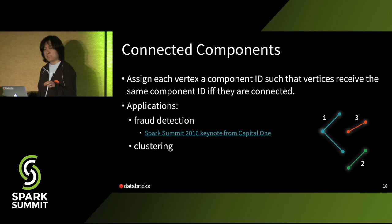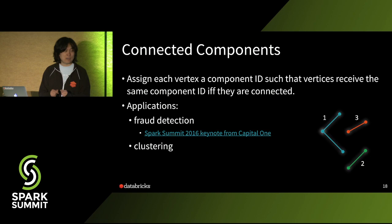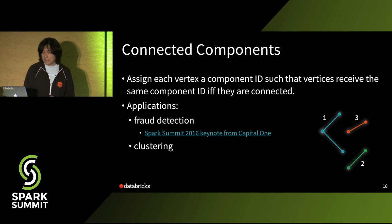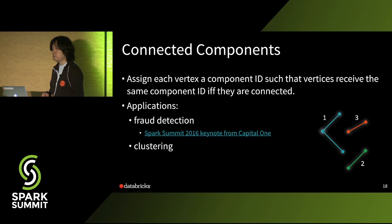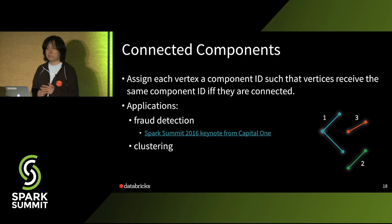The connected components problem is very simple: given a graph, you want to assign each vertex a component ID. If two vertices receive the same component ID, they are definitely connected in the graph; otherwise they should receive different component IDs. There are a couple of applications — you may have heard a talk from Capital One on how they use connected components for fraud detection on credit card applications. Connected components are also used in clustering algorithms and as fundamental building blocks for other graph algorithms.